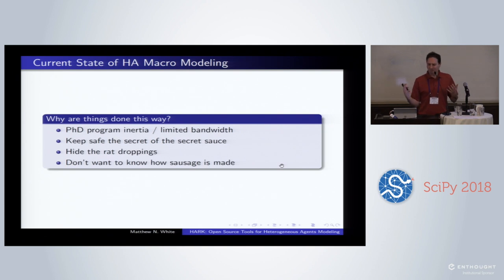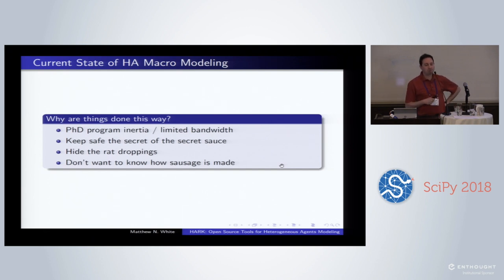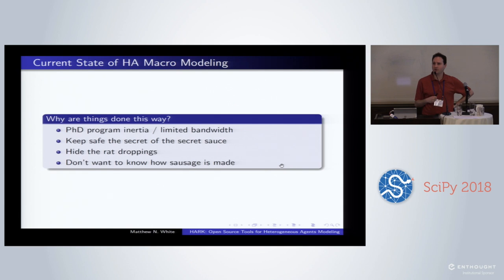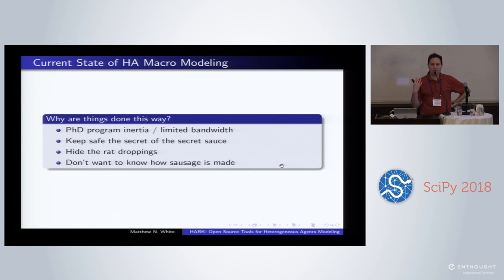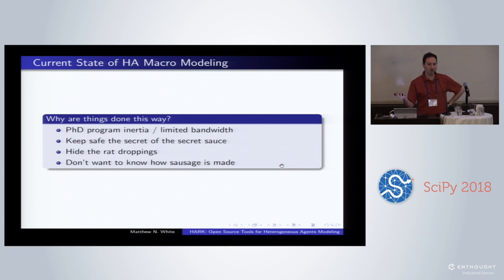Why is it done this way? Somewhat, I think it's PhD program inertia — we continue to teach things we've taught for a long time and feel we need to go through the elaborate hazing ritual that is the first-year economics PhD sequence. There's also limited bandwidth: teaching economics is seen as valuable, and teaching numeric methods and solution methodology is seen as ancillary — well, you'll just learn it if you need to learn it.